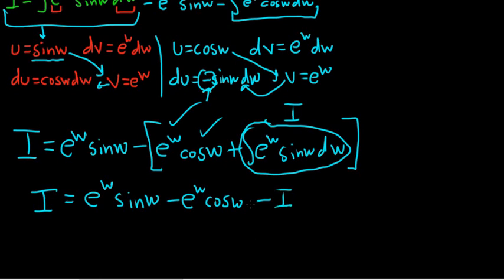And now we just solve for i, because i is the integral we're looking for. So we add i to both sides. So plus i plus i. You have one i plus one i. You have two i's. So two i is equal to e to the w sine w minus e to the w cosine w. Getting there. And then we'll divide by two.